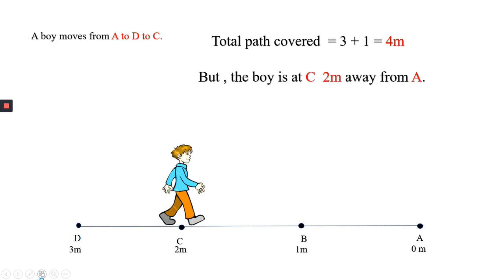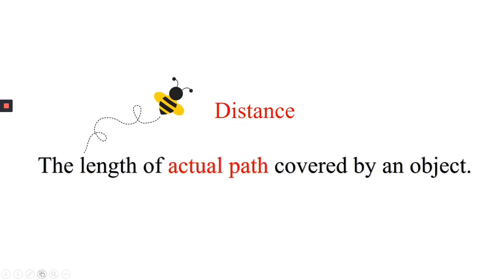But the boy is at C, 2 meters away from A. Which is the correct path length? To find the answer, let's define distance.